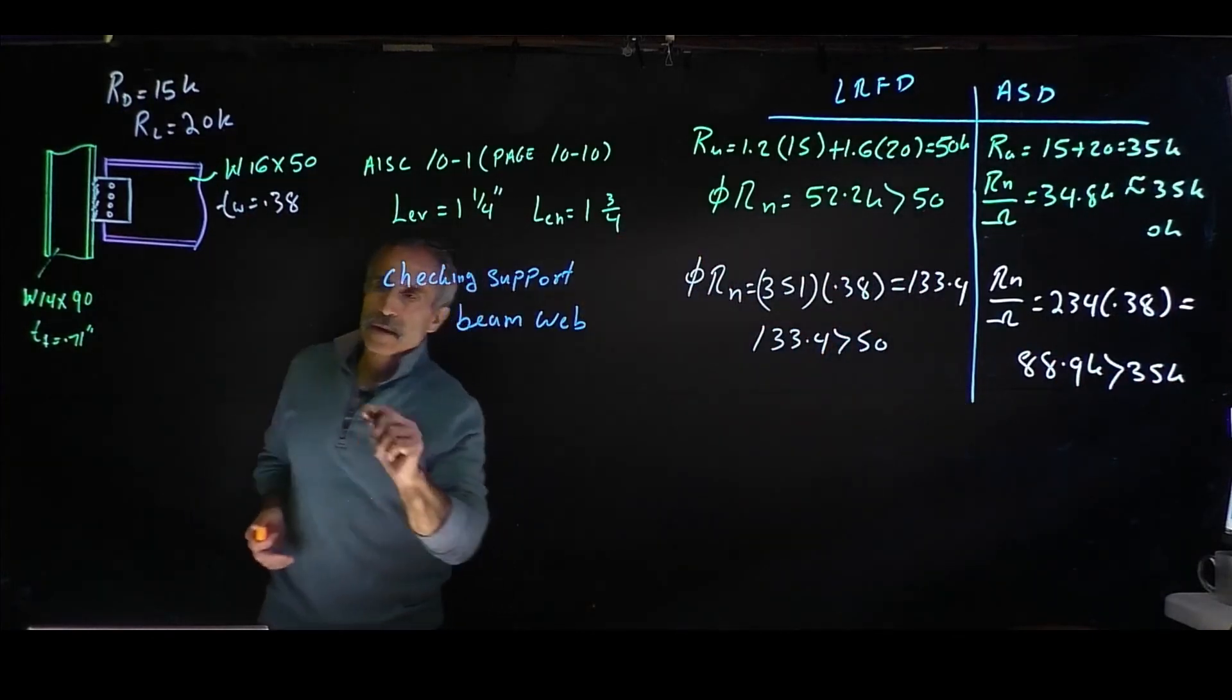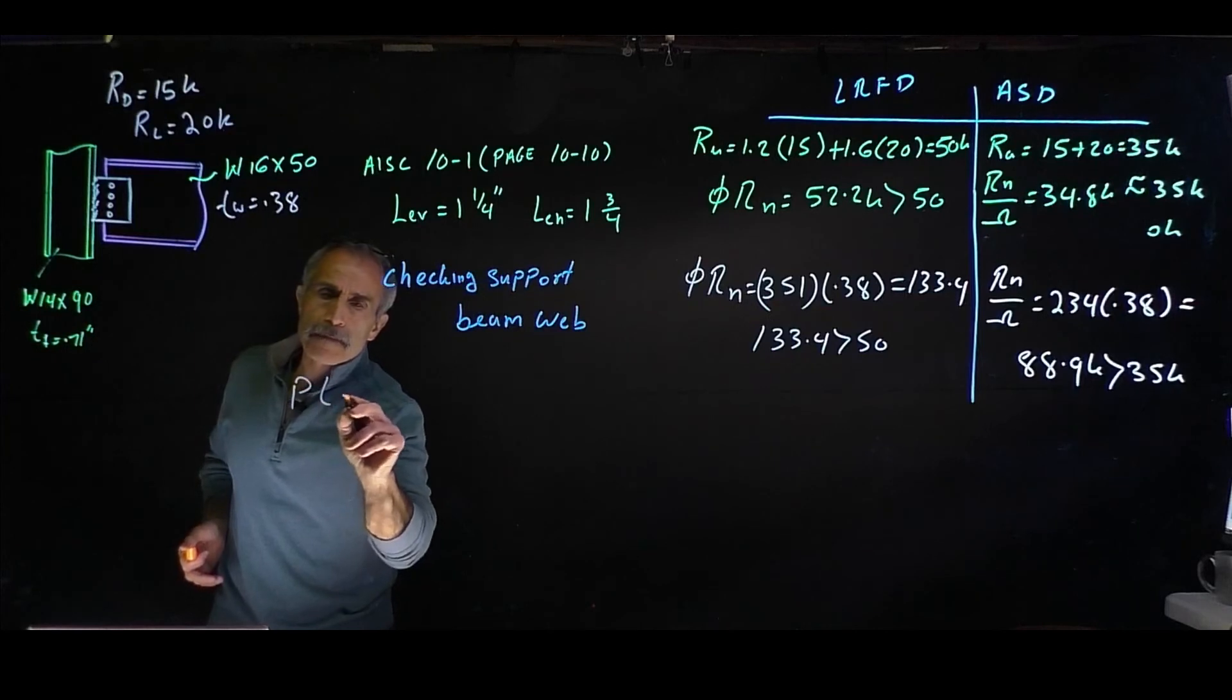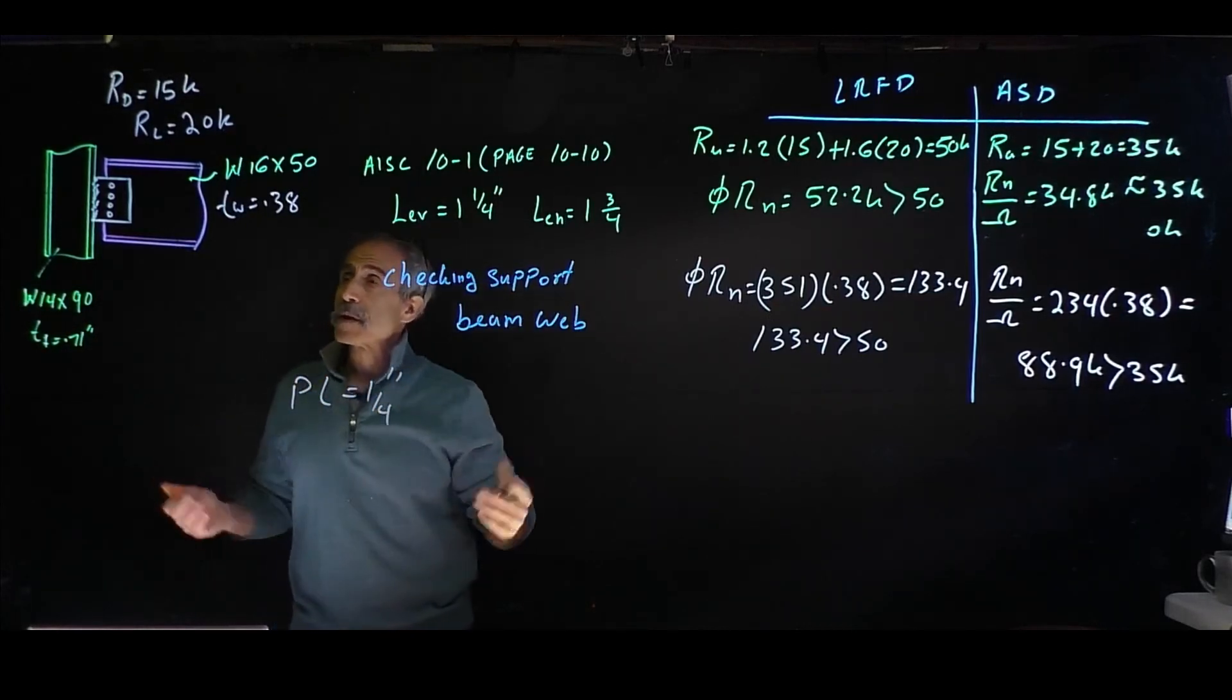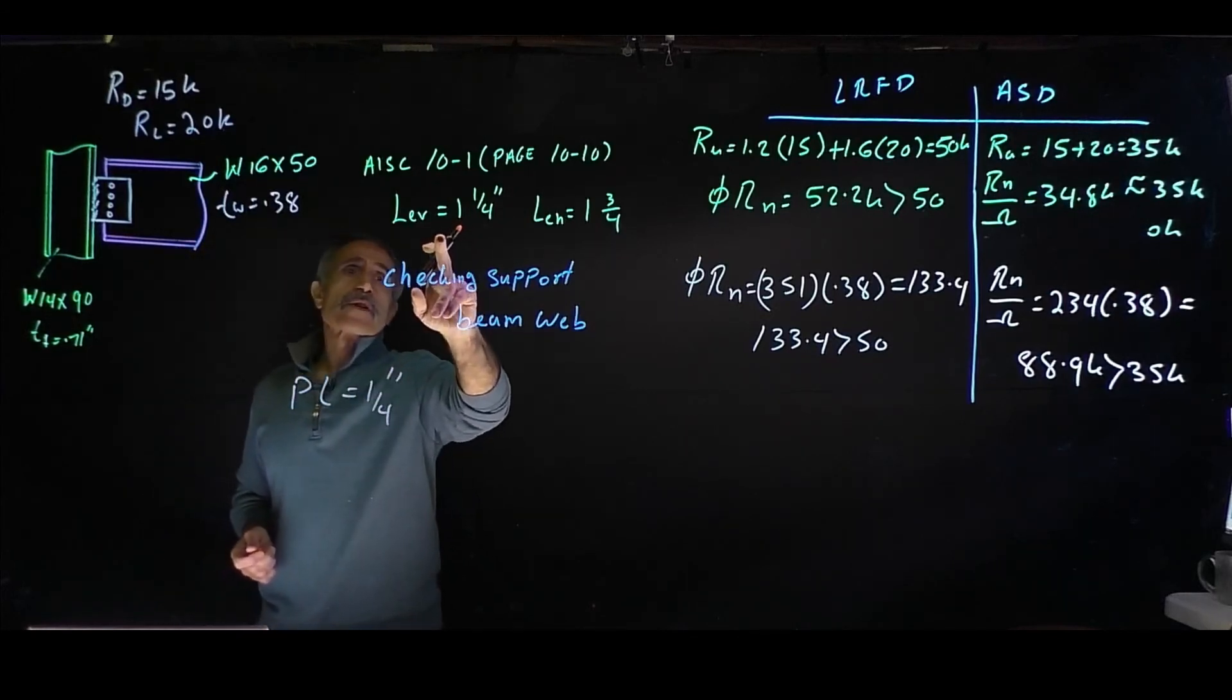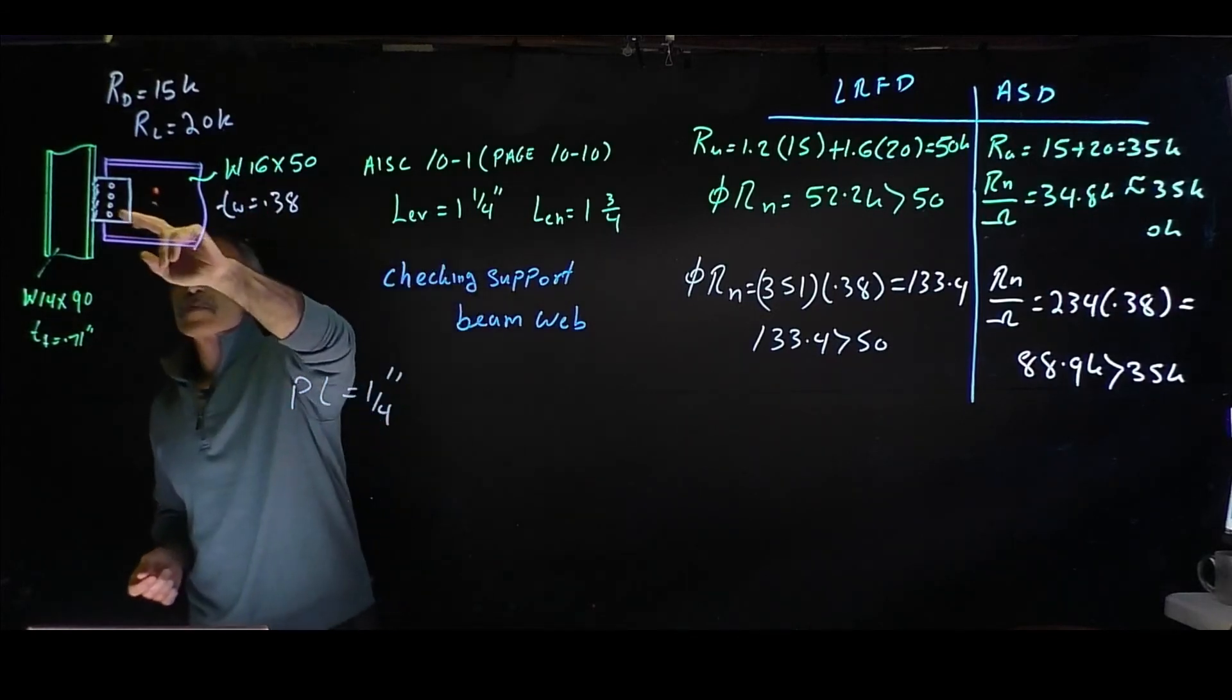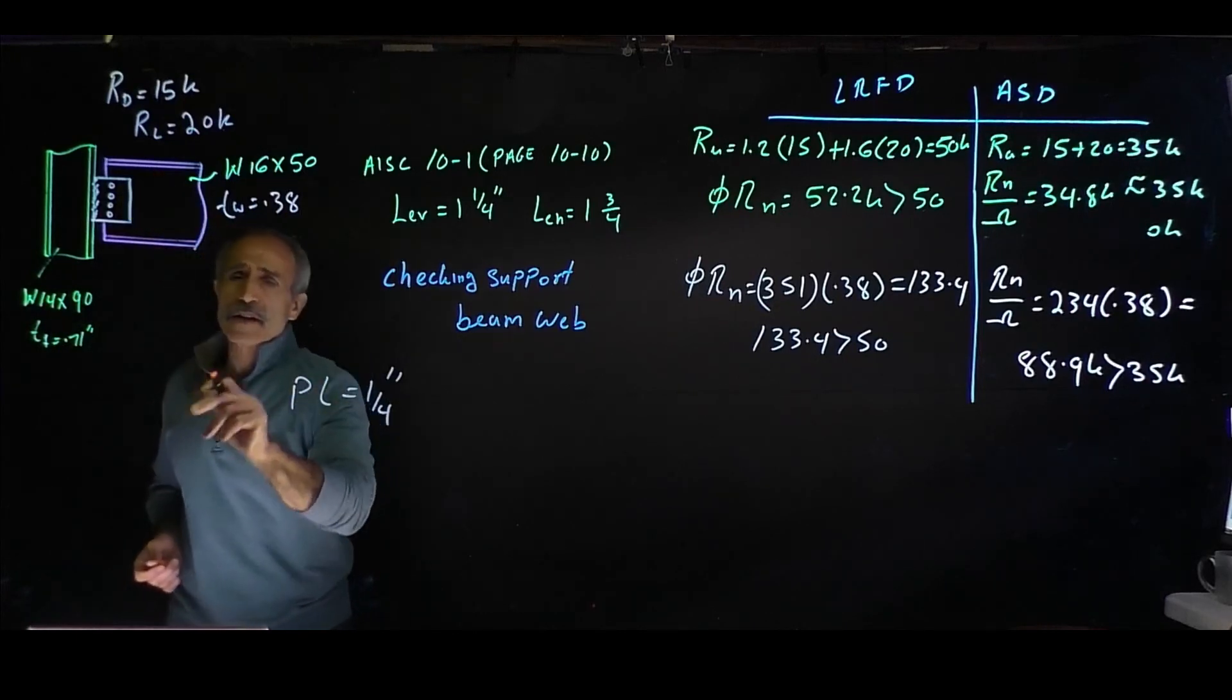So our plate size kind of came out to be—we know it's 1/4 inch, rather be bigger. And we had our Lev vertical was 1-1/4 inch. And this spacing is standard spacing, three inches apart, so you've got nine inches.